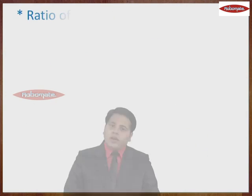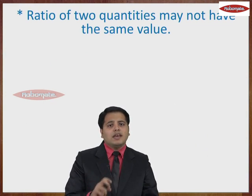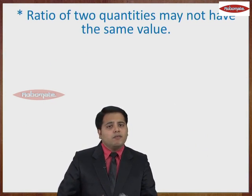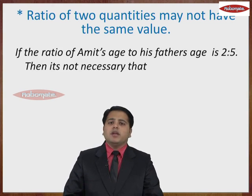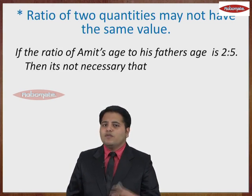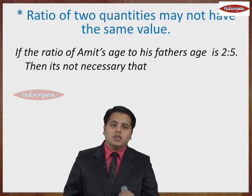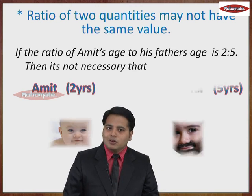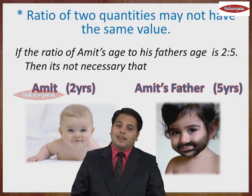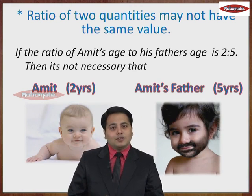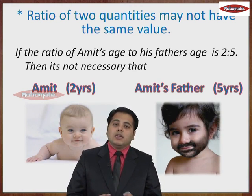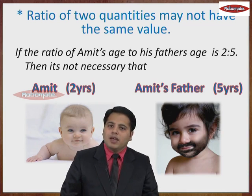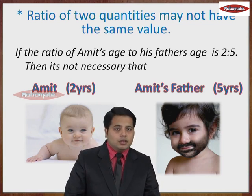Further, a ratio does not mean that it always has the same value. If I am comparing 2 quantities, they might have different values. For example, if the ratio of Amit's age to his father's age is 2 is to 5, that does not necessarily mean that Amit is 2 years old and his father is 5 years old. Of course, that is not possible. But what this means is, the ratio of their ages in the smallest form is 2 is to 5.